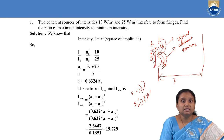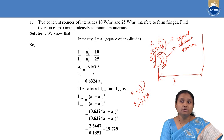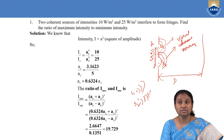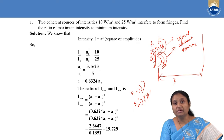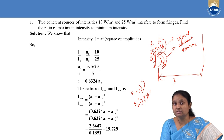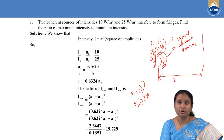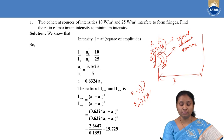Using Young's double slit experiment, we are going to do some problems. Here we are talking about maximum intensity and minimum intensity recorded on the screen. Maximum intensity corresponds to bright fringes and minimum intensity corresponds to dark fringes. In terms of maximum and minimum intensity coming from these two coherent sources, we are going to do some numericals now.